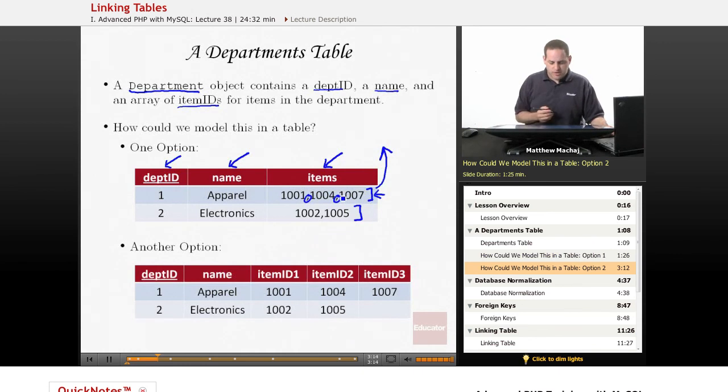So another option you might think would be, let's have a department ID column again, a name column again. But then this time, we just create a column to store the item ID of each item in the department. So we'd have a different column for each item in the department. So we might have one called item ID 1, item ID 2, and item ID 3.